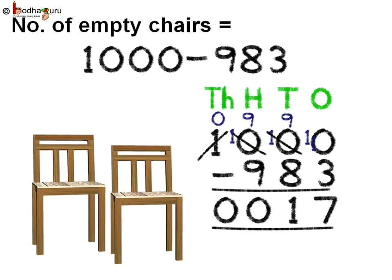Which means we need to find the total number of empty chairs. For this we need to subtract the number of occupied chairs from the total number of chairs. So the total number of empty chairs is 1000 minus 983.